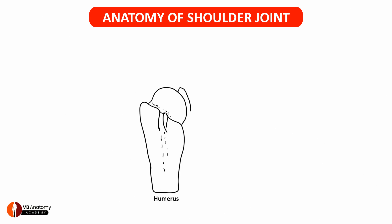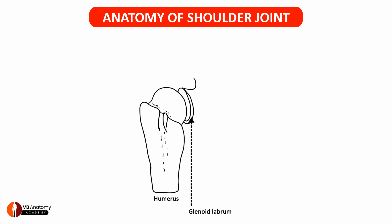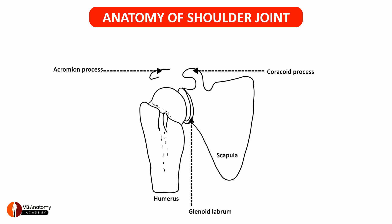That is the head of humerus and the anatomical neck. Here you are seeing the glenoid cavity articulating with the humerus, surrounded by the glenoid labrum. Here is your coracoid process and the scapula.